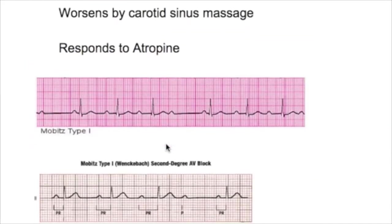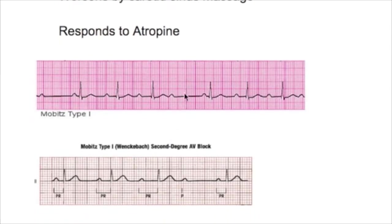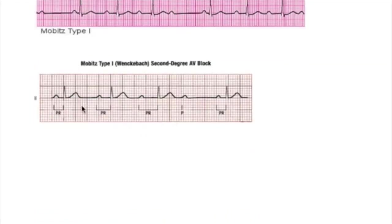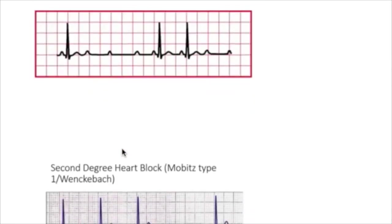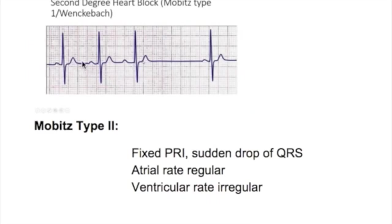This is another example of Mobitz type one showing a missing QRS and progressively increasing PR interval. This ECG shows a second degree heart block Mobitz type one with progressively increasing PR interval, and there is also a QRS missing as well as a P wave missing.